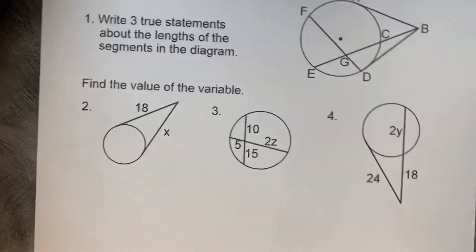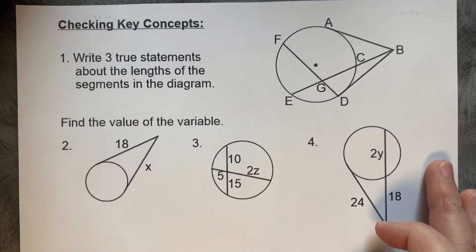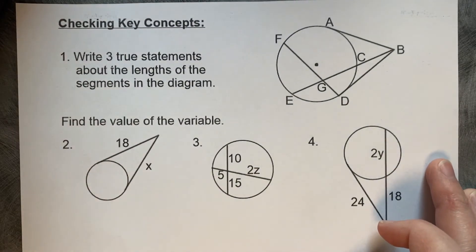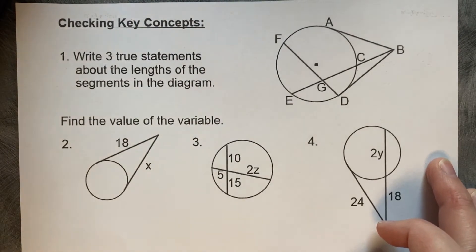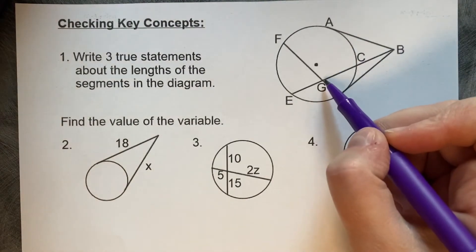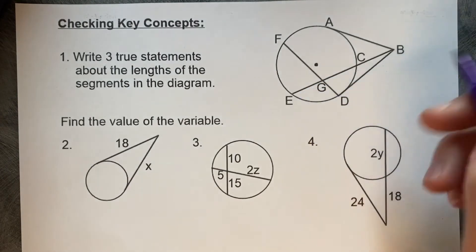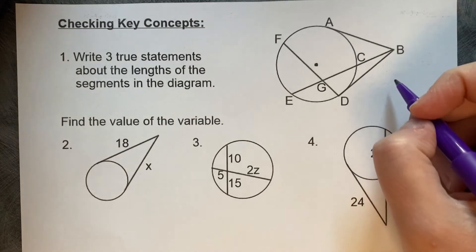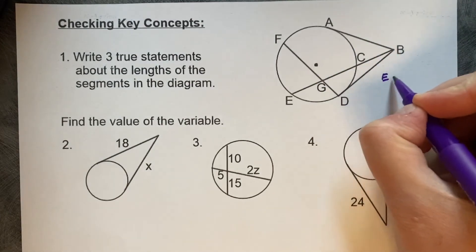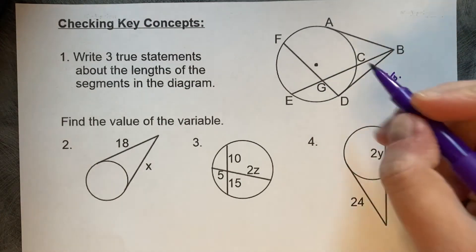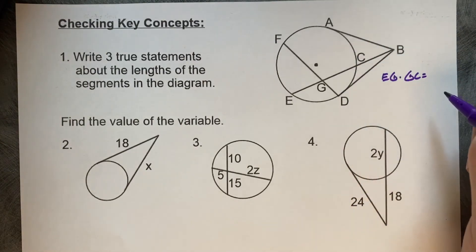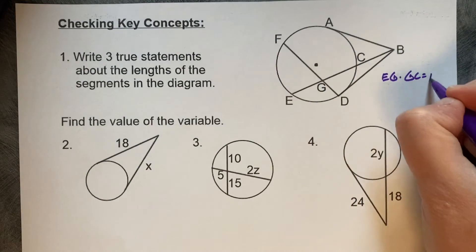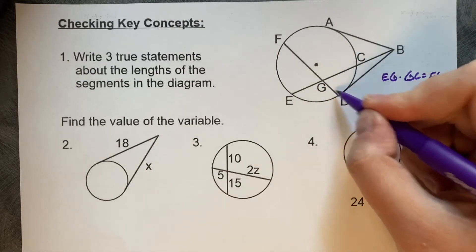All right, let's check up with some naked number problems here. Checking key concepts. Write three true statements about the lengths of the segments in the diagram. So the first one that I noticed is that we've got an intersection on the inside. So we can talk about the multiplication of the segments here. So we can say that EG times GC is equal to FG times GD.